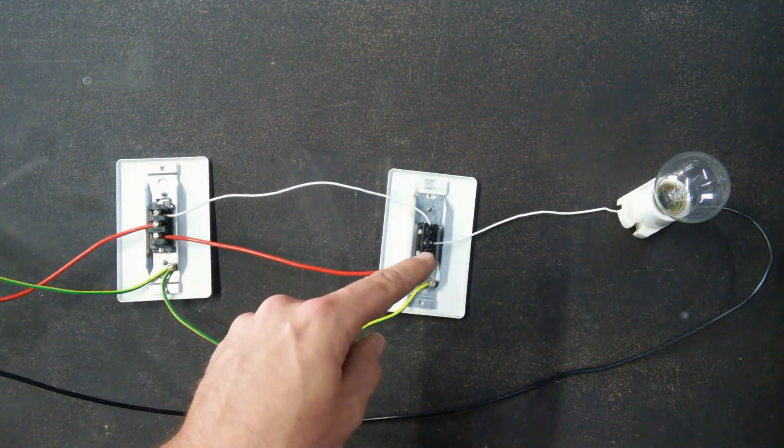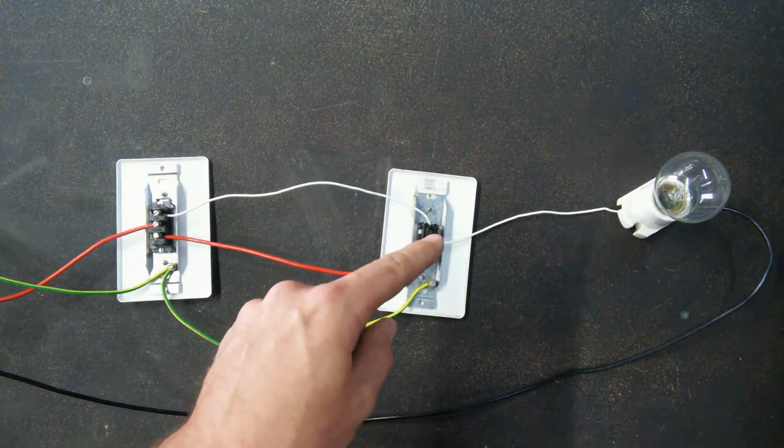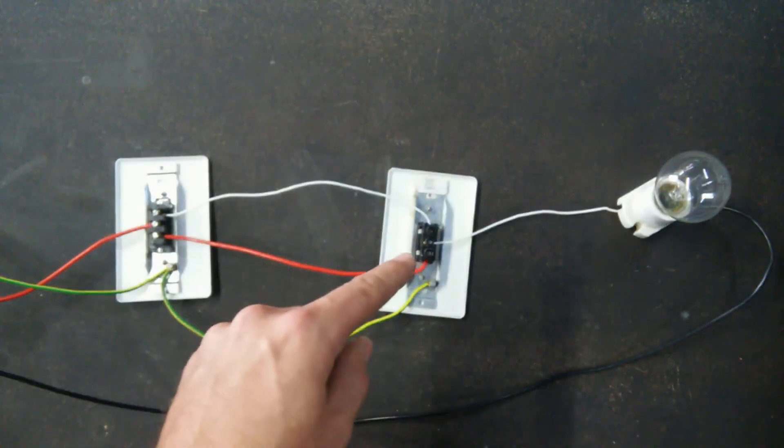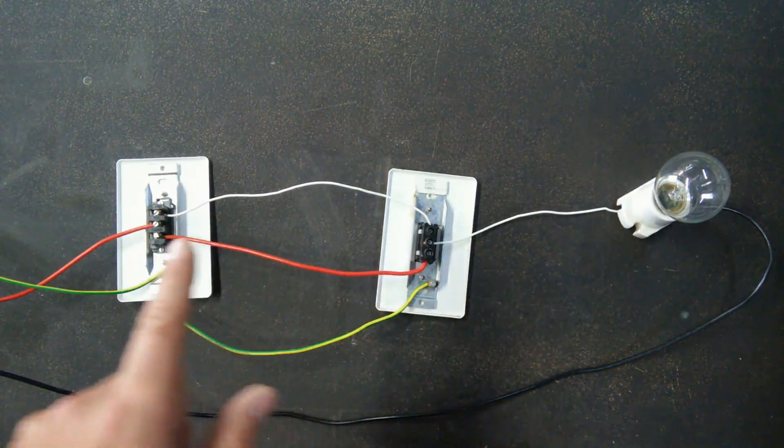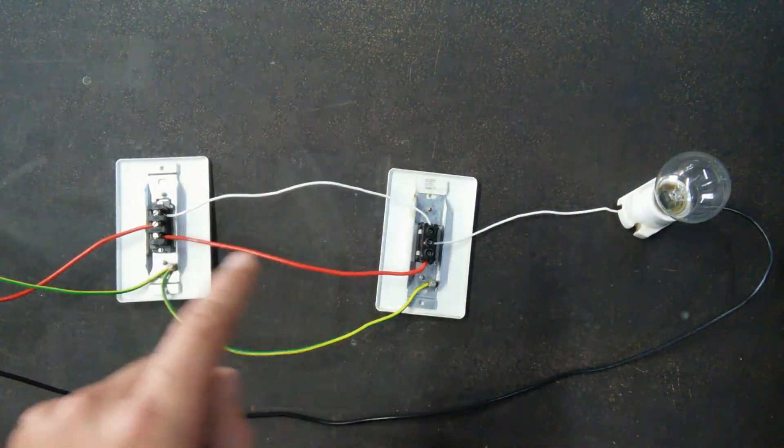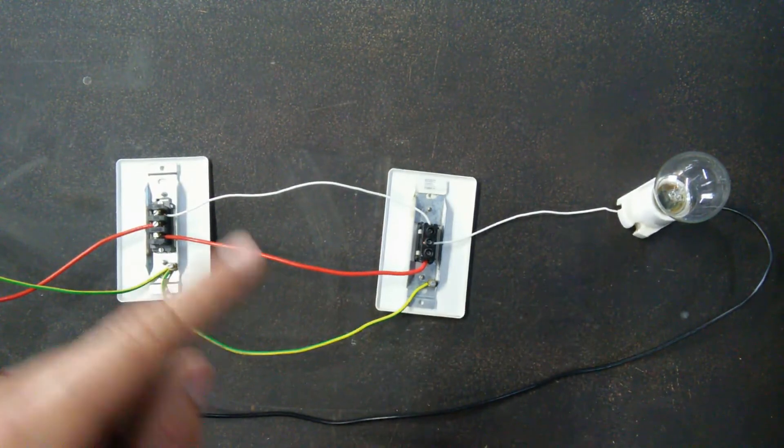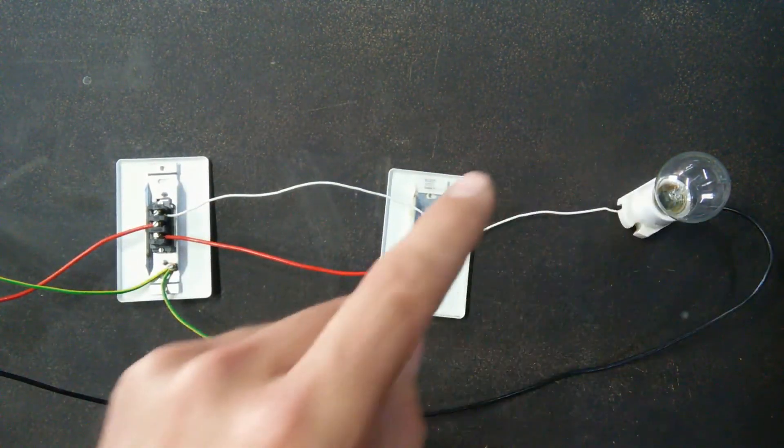Because I haven't done anything to that wire, this live can't go to the light. So it's actually still switched off now. Depending on which one I switch on, it depends on where the power goes. If I switch this power to this side, it'll go through and go to the light again.